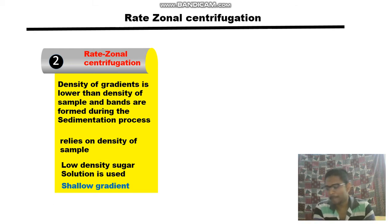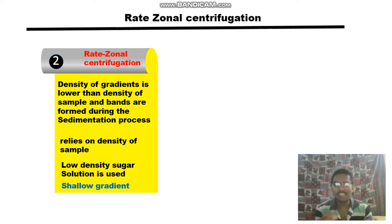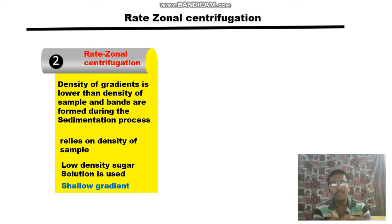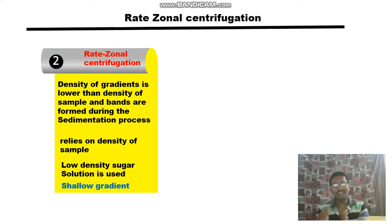Gradients are used to stabilize the bands or zones of particles. They provide the medium with increasing density and viscosity as you go through the centrifuge tube, giving an increase in both density and viscosity.